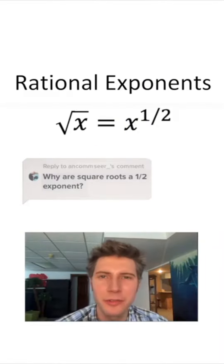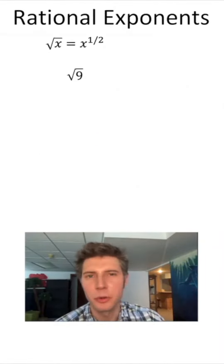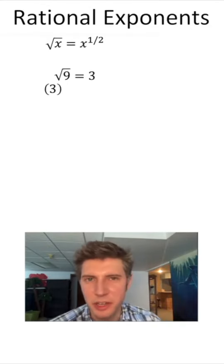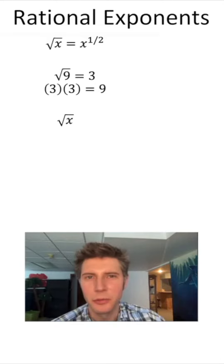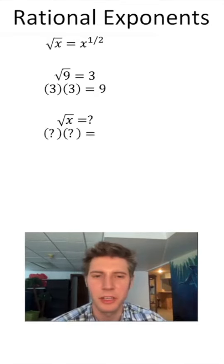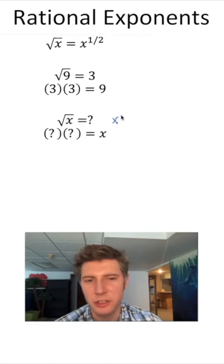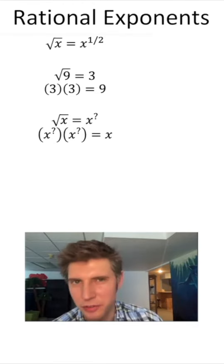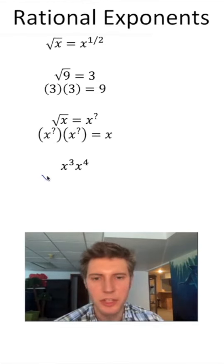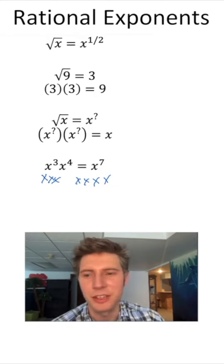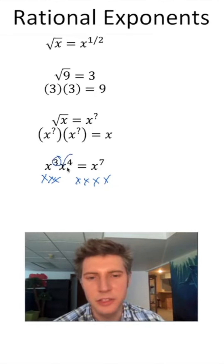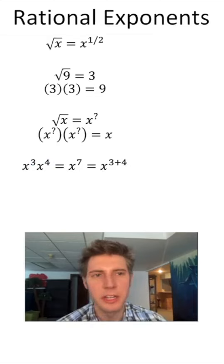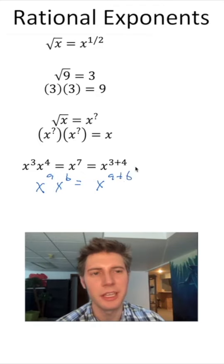Why are square roots a one-half exponent? What is the square root of 9? It's 3, because 3 times 3 equals 9. So the square root of x is some value where that value times itself equals x. Let's call it x to the question mark, since we're trying to find out what that exponent would be. Quick aside: what is x to the 3 times x to the 4? That means 3 x's times 4 x's — we have 7 x's, so it's x to the 7. Another way to get that: add the exponents. In general, x to the a times x to the b equals x to the (a plus b).